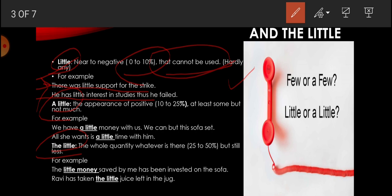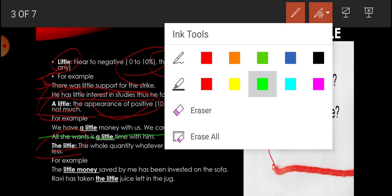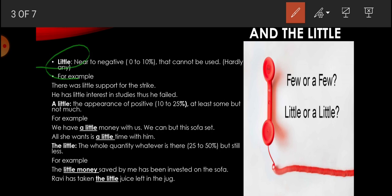Next is a little. The appearance of positive. Here we can say 10 to 25%, at least some but not much. We can say that we have a little money with us, we can buy this sofa set, that I can buy. Next, all she wants is a little time with him - just positive, some. So students, this is the easiest way that when you have little to be negative, not to be positive, just so we can use a little.